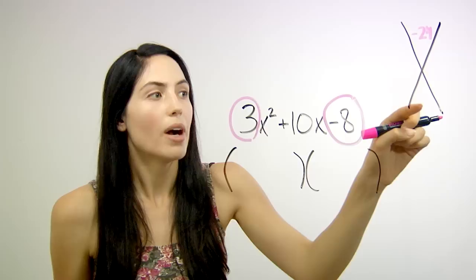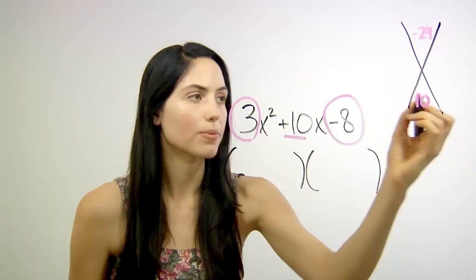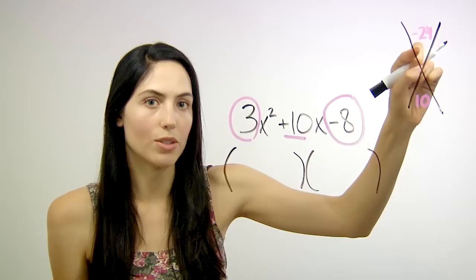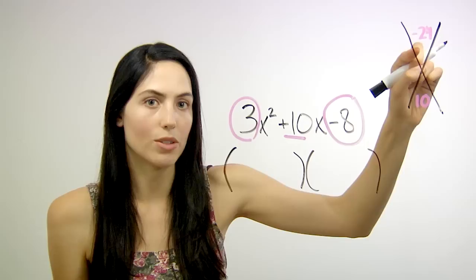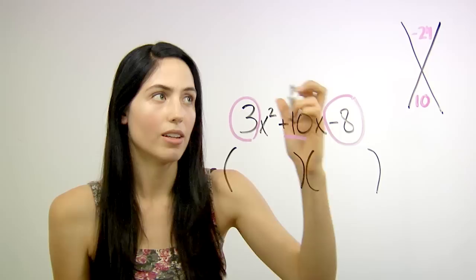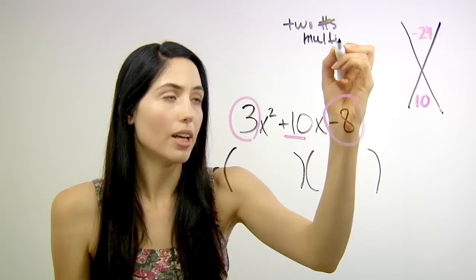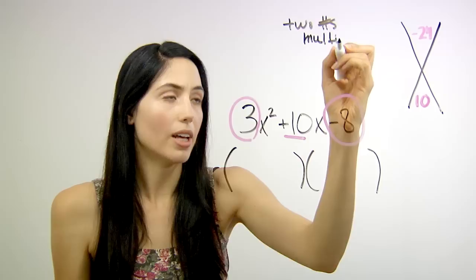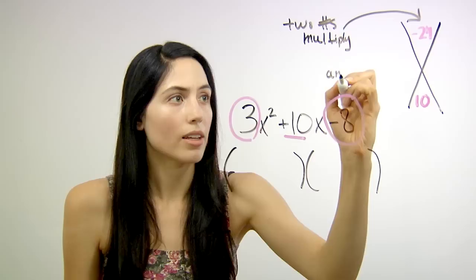In the bottom, you're going to put your middle number, 10. Now what you need to do for the trick is find two numbers that multiply to give you negative 24 and add to give you 10. So we can write that. Find two numbers that multiply to negative 24 and add to 10.